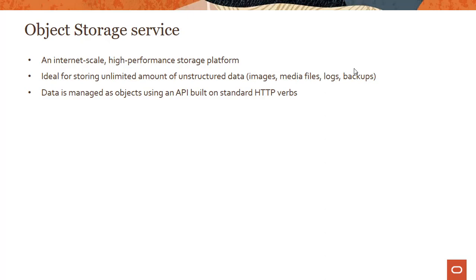Data is managed as objects and you use APIs built on standard HTTP verbs — like GET object when you want to read an object from a bucket, and PUT object when you want to write an object to a bucket. This is very different from using an NFS protocol, which you would use with a file system managing data in a file hierarchy, or iSCSI, which you would use in block storage to access data as fixed-size blocks on disk. That's the main difference: data managed as objects using standard HTTP verbs.